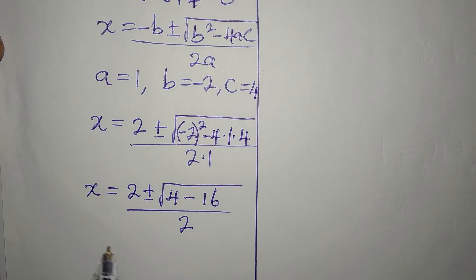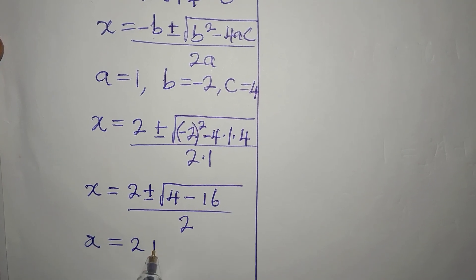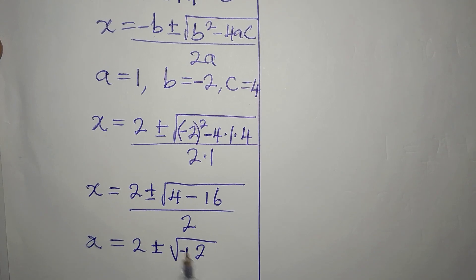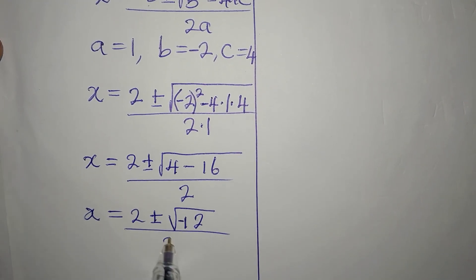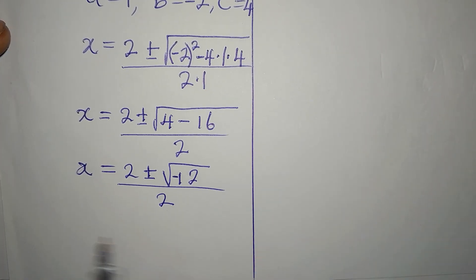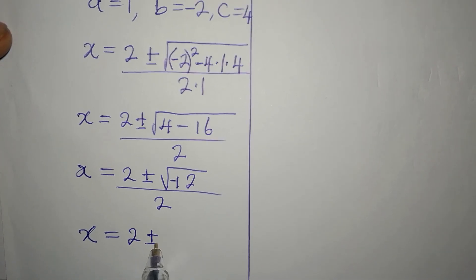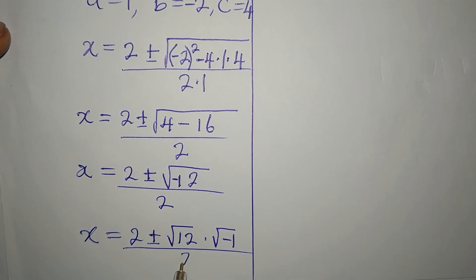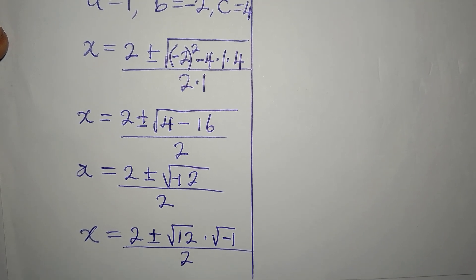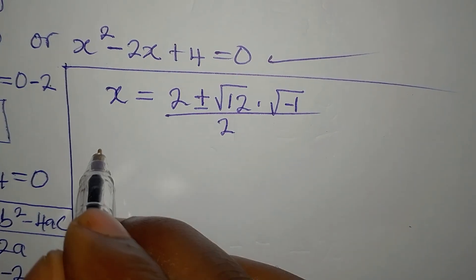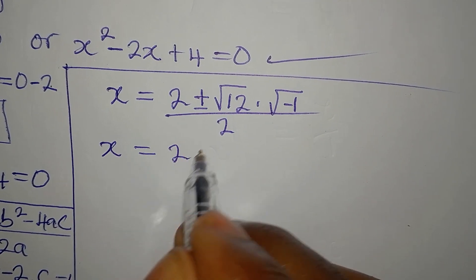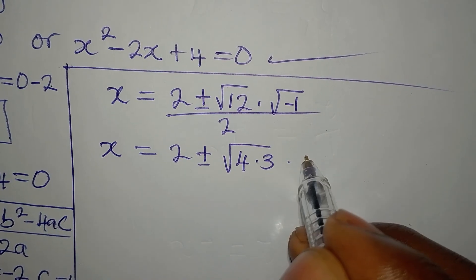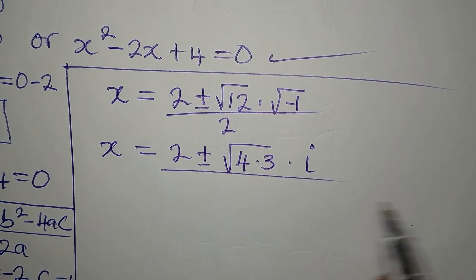So we go ahead to get x equals 2 plus or minus square root of 4 minus 16 is negative 12. Then we divide by 2. If I take a step, I'll write x to be 2 plus or minus square root of 12, multiply by square root of negative 1, as we divide by 2. This way we'll be able to find the square root of 12. So our x now will be 2 plus or minus square root of 4 times 3, because 12 is 4 times 3, then multiply by i, square root of negative 1 is i, then divide it by 2.